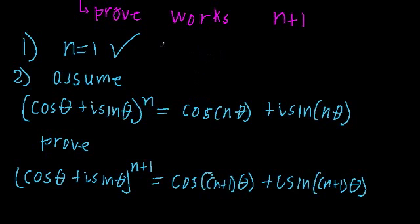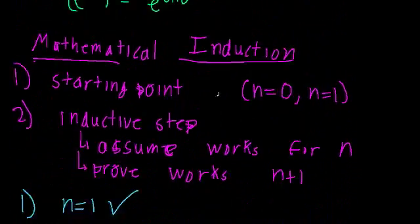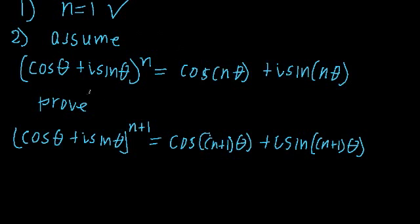Welcome back. We're in the middle of proving De Moivre's theorem by using mathematical induction. Essentially what we need to do right now is we're going to assume that this works: cosine theta plus i times sine theta, all raised to the index n, is equal to cosine n theta plus i times sine n theta. We're going to assume that works and we have to prove that it works for the case when the index is n plus 1.